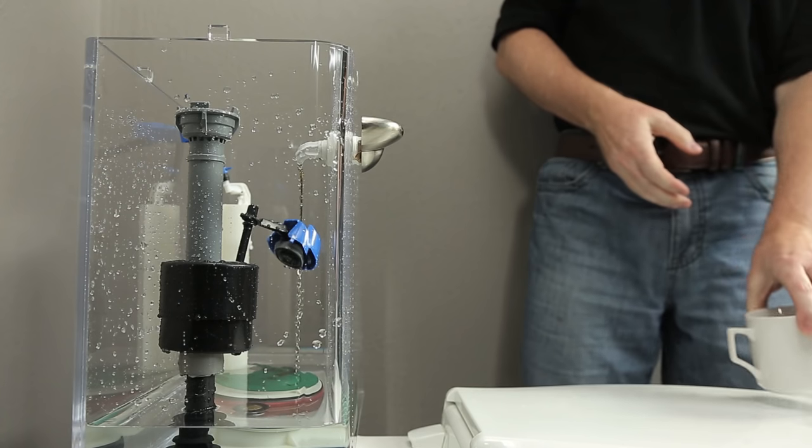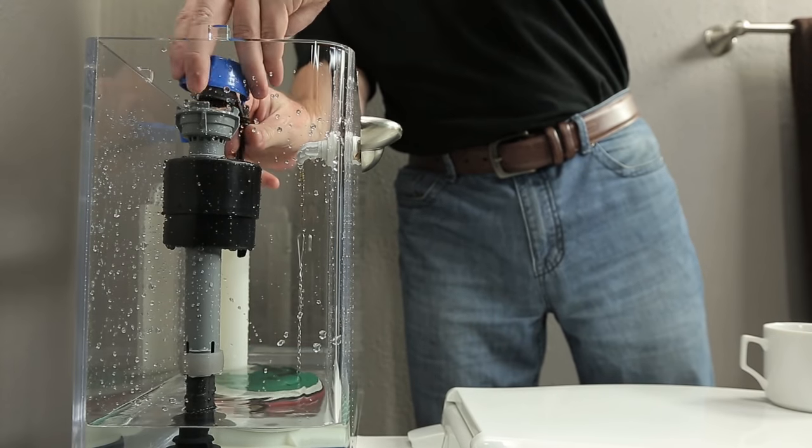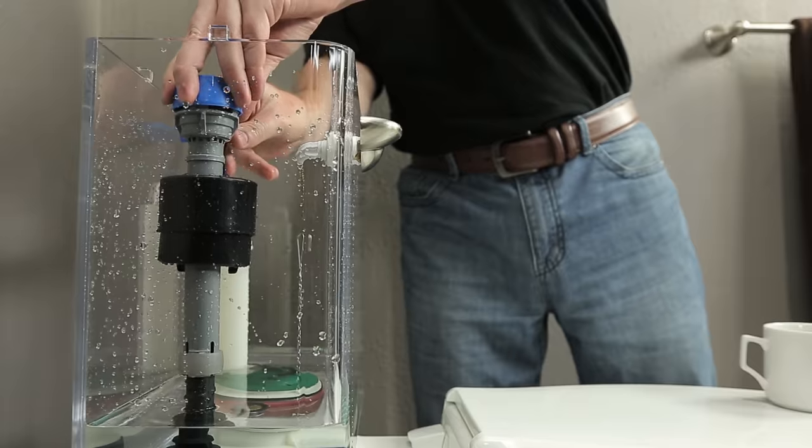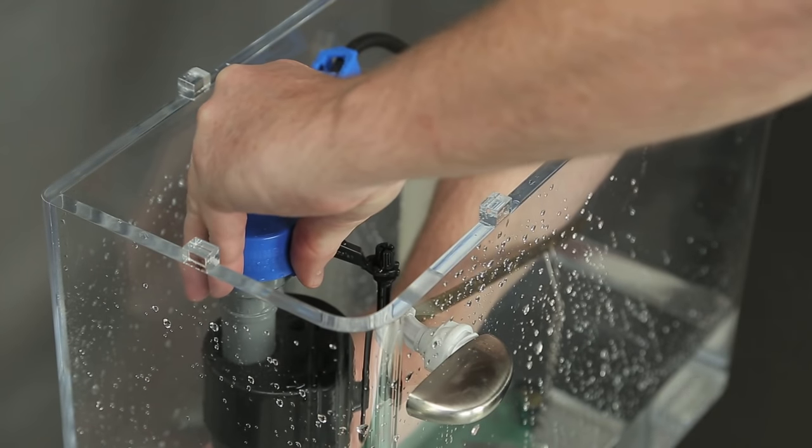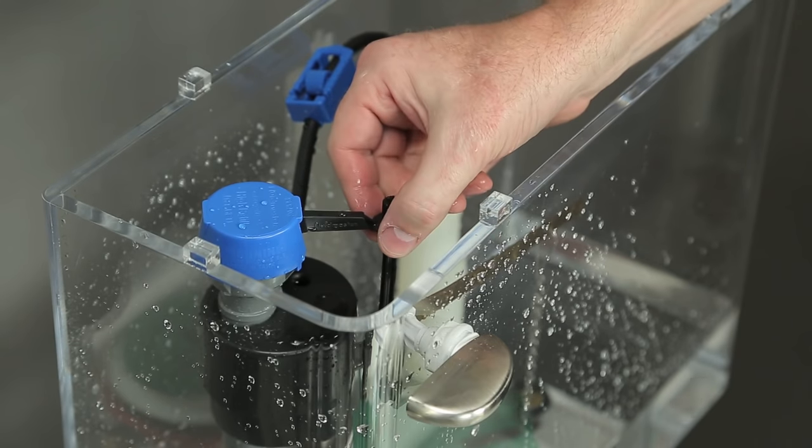With the water supply turned off, place the cap assembly on the top of the fill valve with the adjustment rod next to the refill tube. Press the cap assembly down and twist clockwise one-eighth turn to lock it in place. Make sure the float cup is free to move up and down.